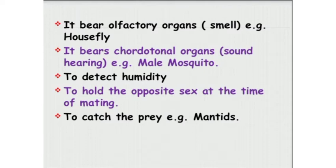Antennae bear chordotonal organs, which are for sound hearing — for example, male mosquito. They are also used to detect humidity, to hold the opposite sex at the time of mating, and to catch prey — for example, water bugs.